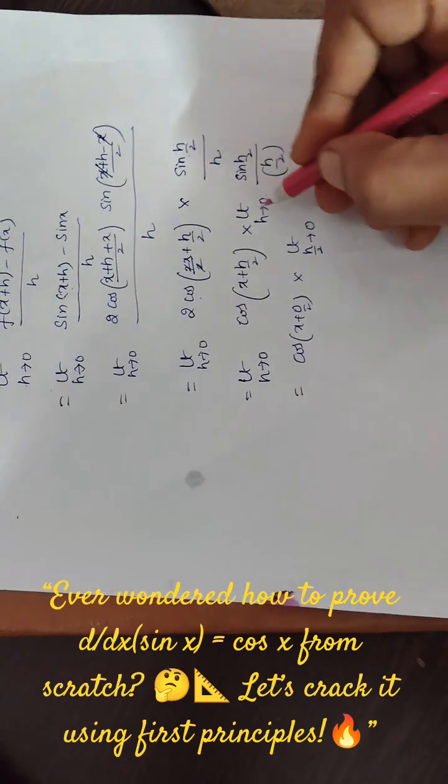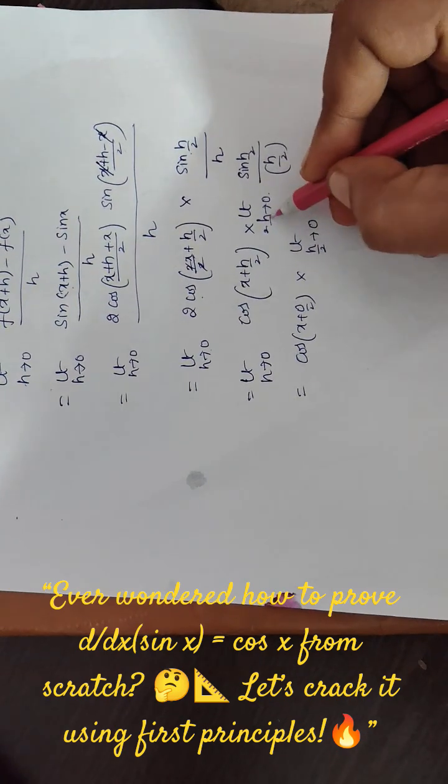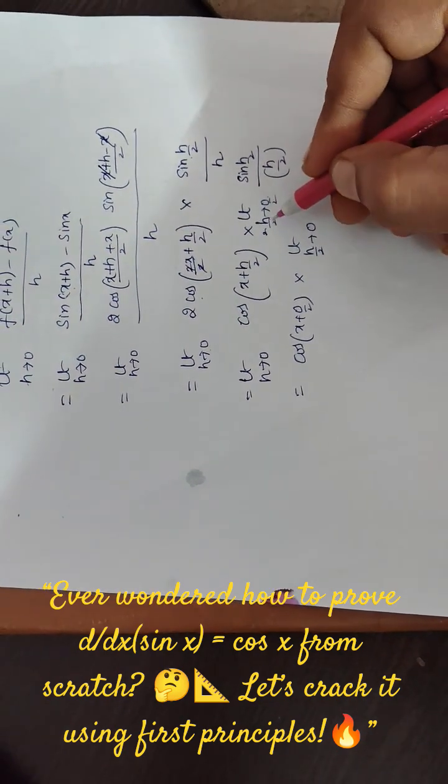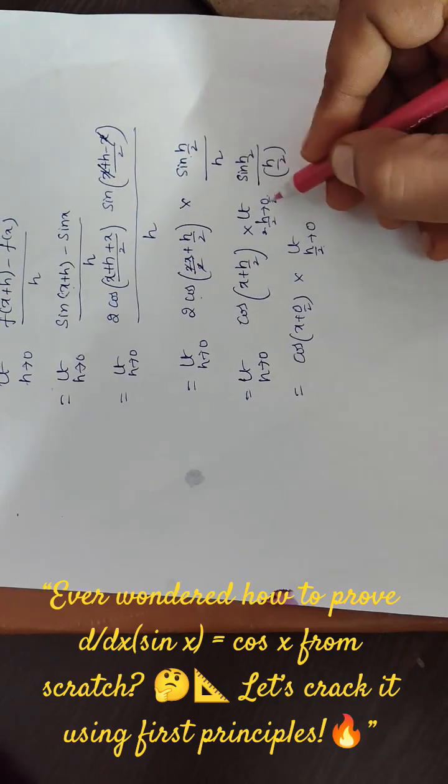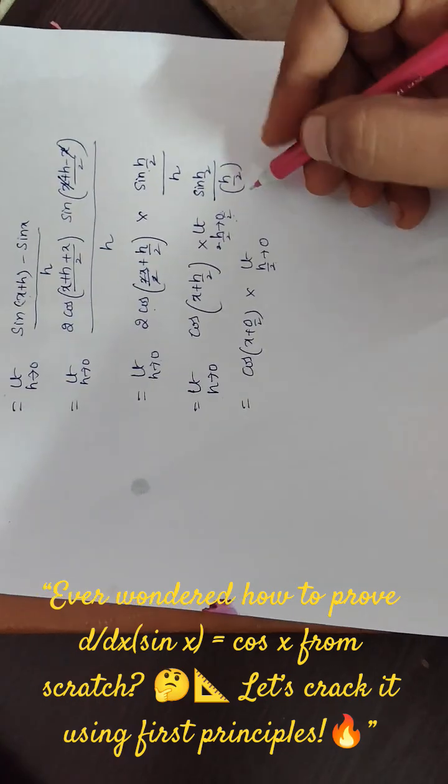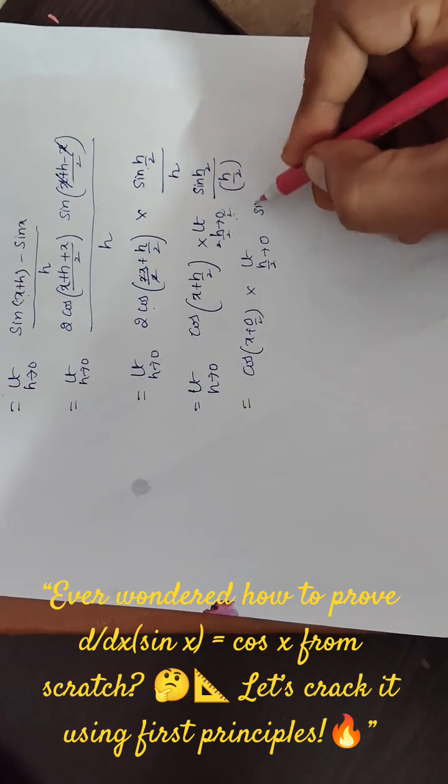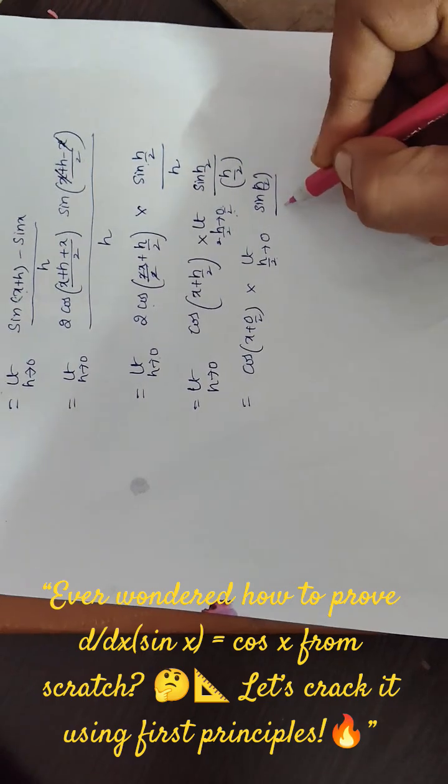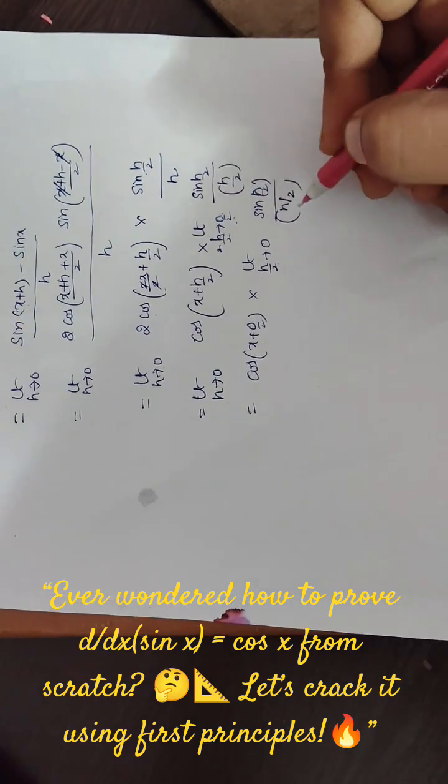It tends to 0. If you divide with 2 on both sides, we will get h by 2. H by 2, 0 by 2 that is 0. 0 by anything is 0. And here we form sin h by 2 by h by 2.